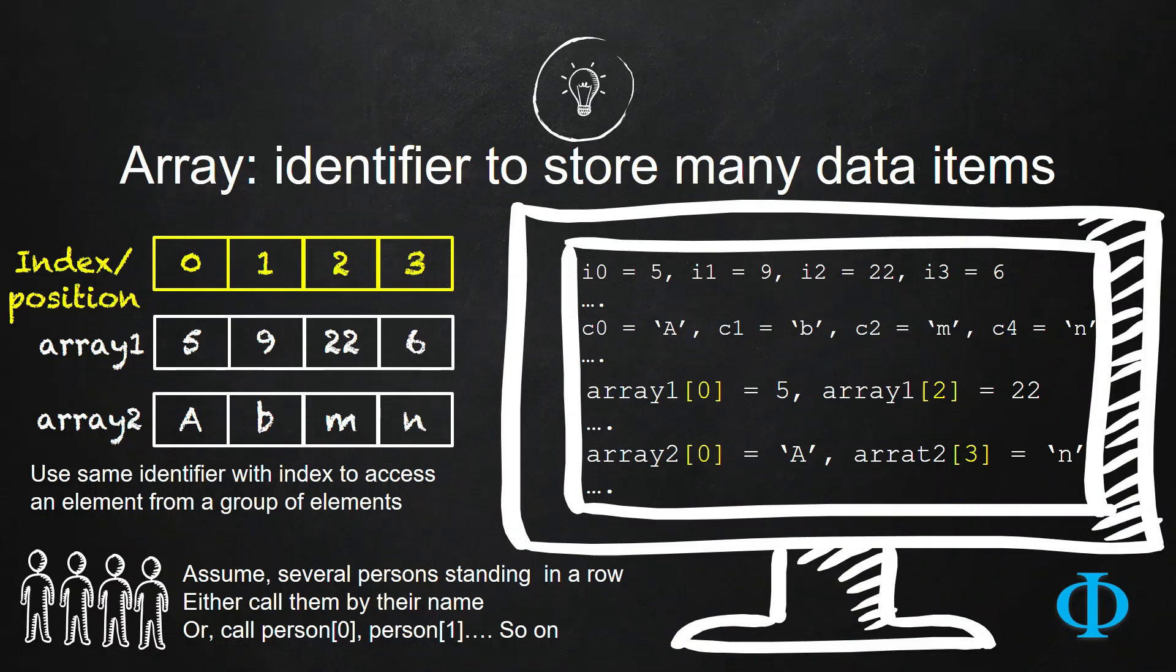Well, so what is an array? Before going to the implementation of array, let us try to understand the concept. Array is basically a very common concept in all different programming languages. Array means some kind of identifier that can store many data items under the same name.